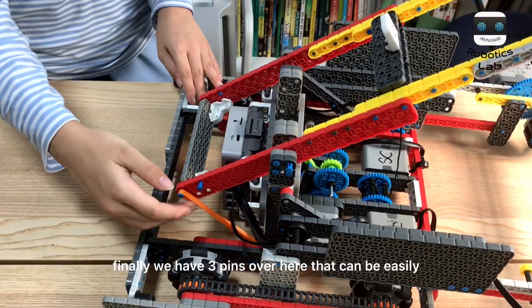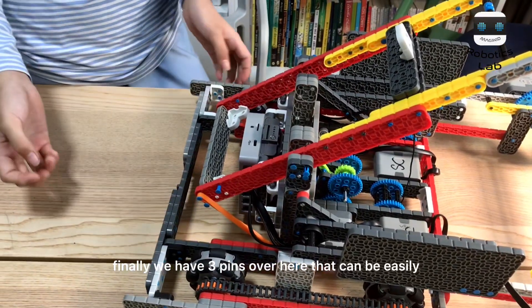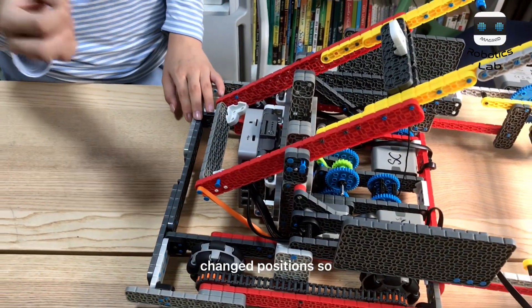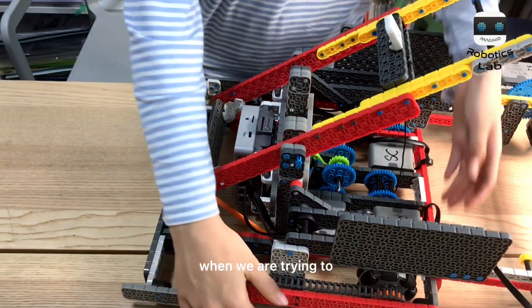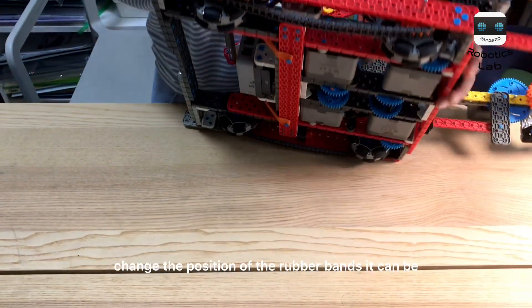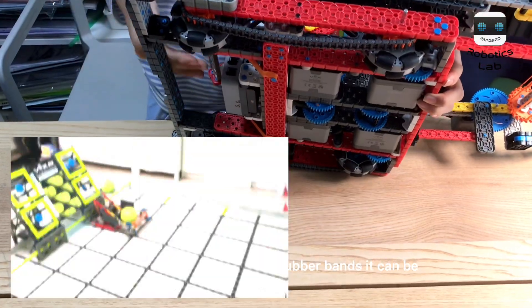Finally, we have three pins over here that can be easily changed positions, so when we are trying to change the position of the rubber bands, it can be easily changed.